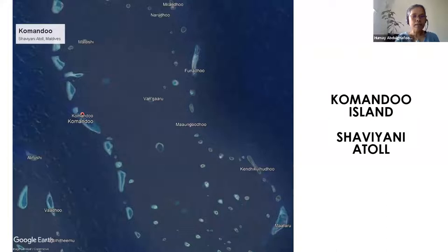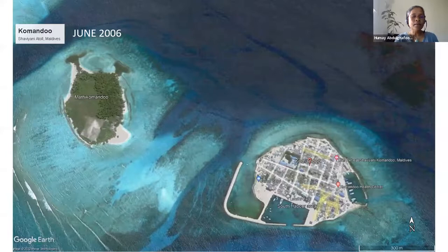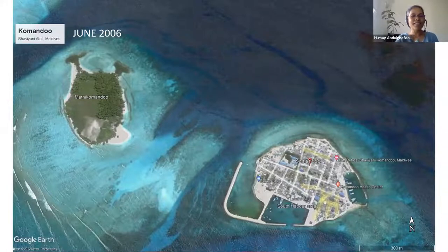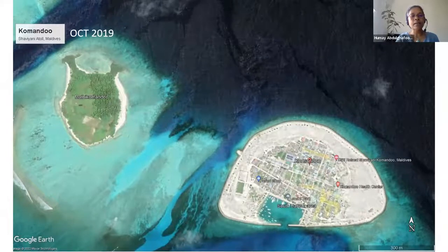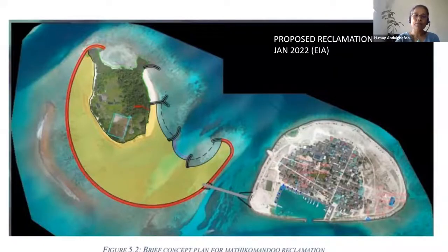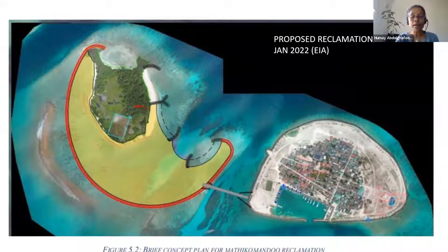This is Shaviani Atoll — I want to mention Komando Island. In 2006, it's not a natural island. In 2014 and 2019, you can see the modifications. In 2022, the government proposed to reclaim the next-door island and link the two islands, even when the revetments protecting Komando Island are overtopping and the land cannot be used. So this sand remains dormant and unused also.